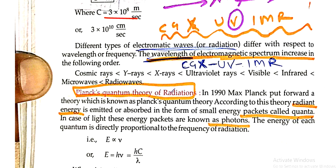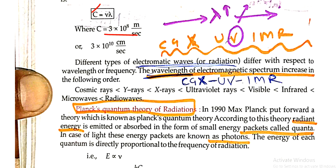Cosmic rays, gamma rays, X-rays, ultraviolet rays, visible rays, infrared rays, microwaves and radio waves. In this direction, wavelength increases.